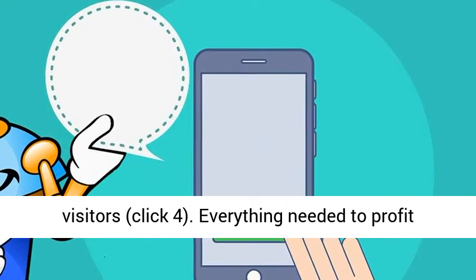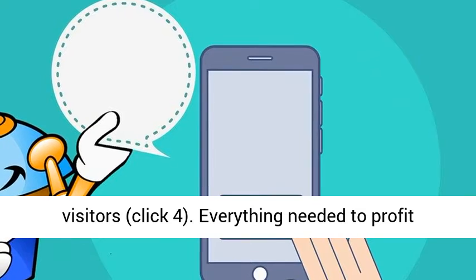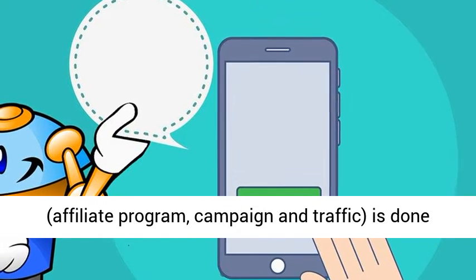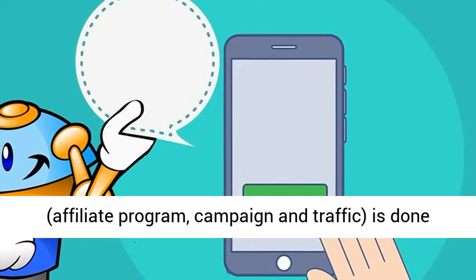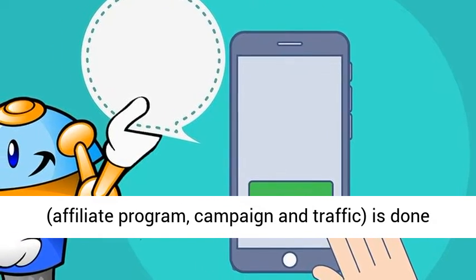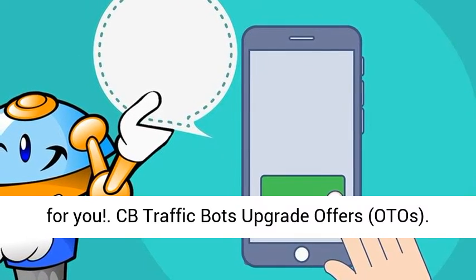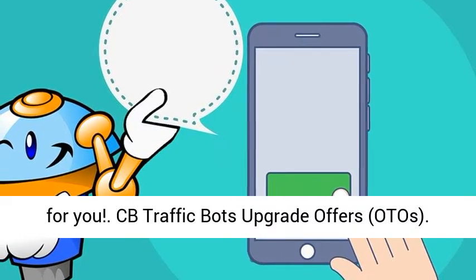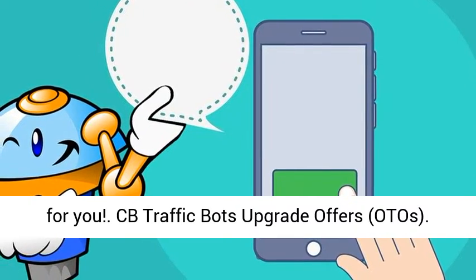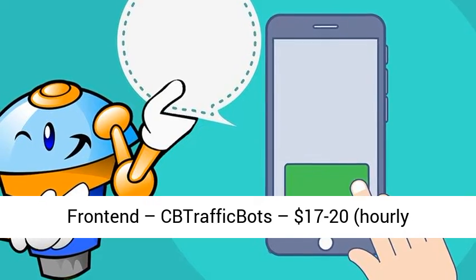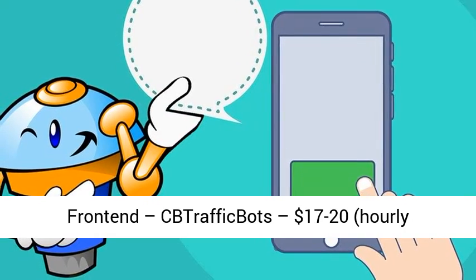CB Traffic Bots Upgrade Offers and OTOs. Front End: TrafficBits, $17.20 — Hourly DIMA Sale. The core software that lets people launch ClickBank affiliate campaigns that get traffic.